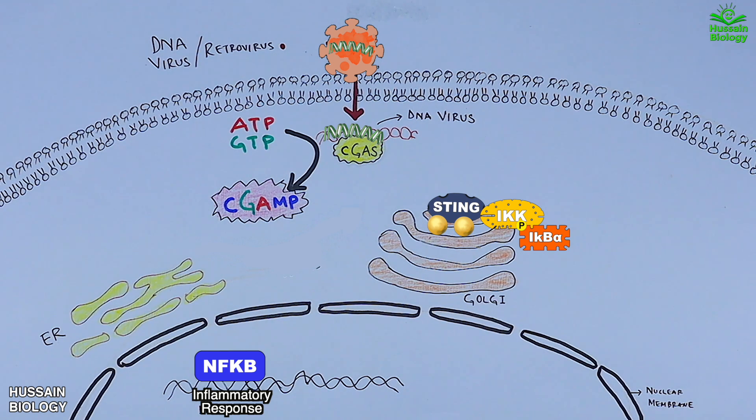On the other hand, the activated STING molecule also recruits TBK1 molecule, that's TANK-binding kinase 1 molecule. This TBK1 molecule at Golgi recruits and activates IRF3 molecule with phosphorylation. The phosphorylated and activated IRF3 molecules get into the nucleus where they drive the transcription of type 1 interferon genes.